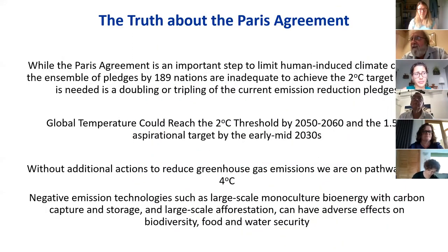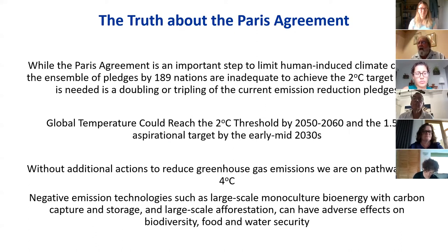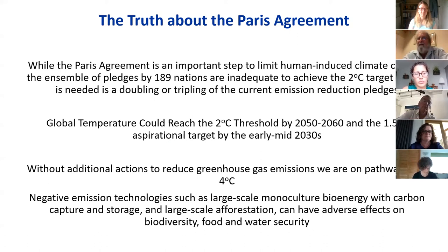The Paris Agreement is a good agreement, but the current pledges are totally inadequate. We are likely to reach 1.5 degrees Celsius in the mid-2030s and likely pass the 2-degree target around 2050–2060 unless we have significantly strengthened pledges. That is why the meeting in Glasgow in a couple of months is so crucial.